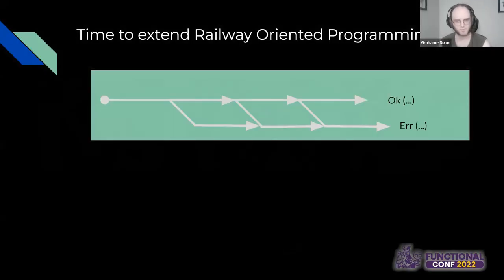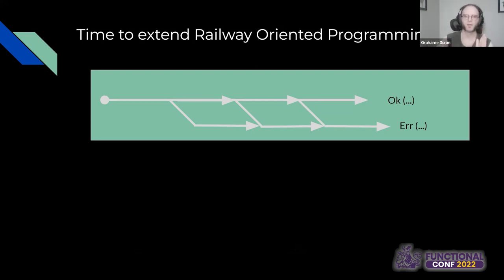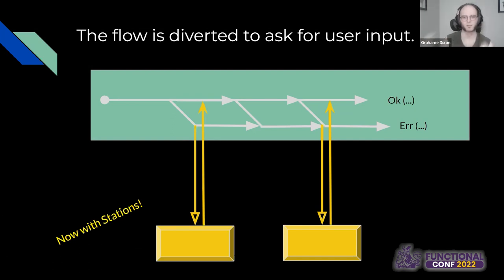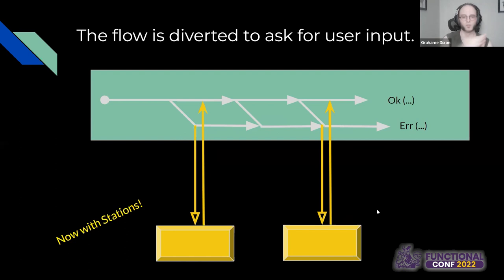How are we going to solve this? We're going to use railway-oriented programming. When I was thinking about this, I thought about that little train on the track. What I really need is for that train to go somewhere else, ask the user to figure out what choice to make, and then come back to that exact location so I can continue going on the flow of things needed during that attack. That's 'now with stations' — little stations for all the different choices the user might have to make during this process.